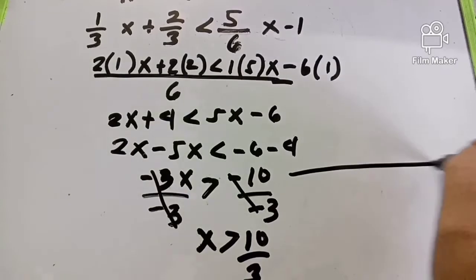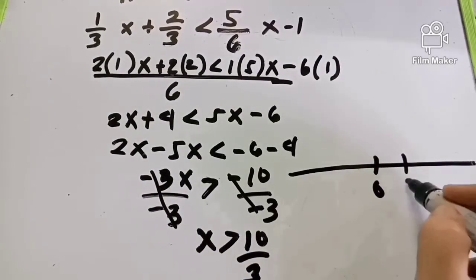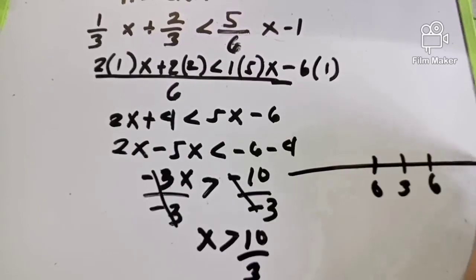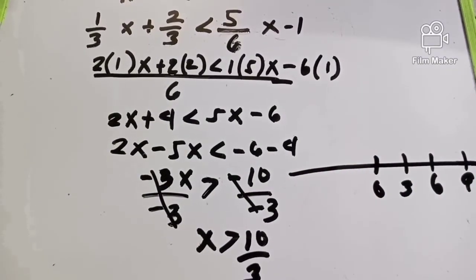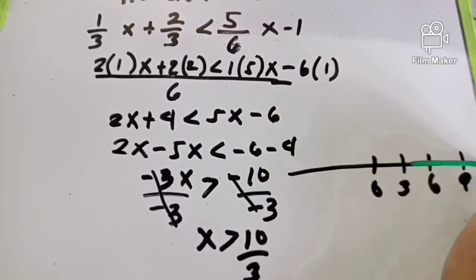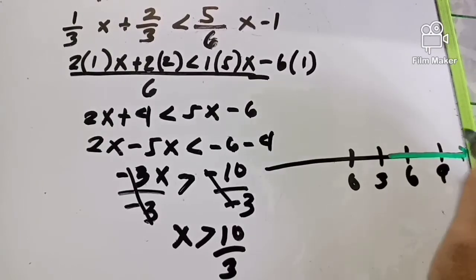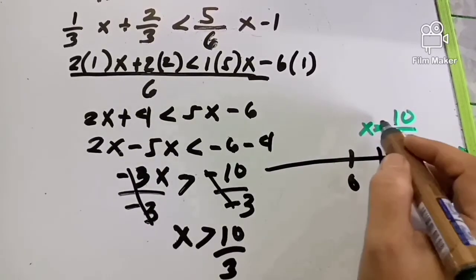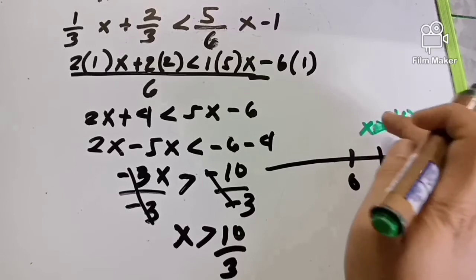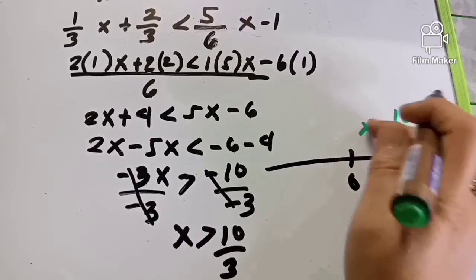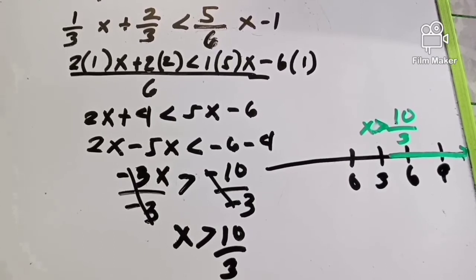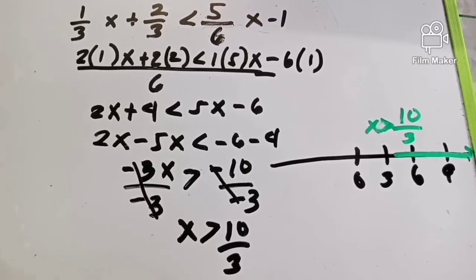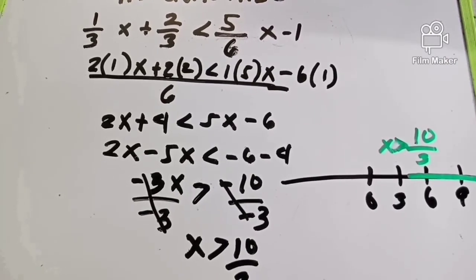How do we graph X greater than 10 over 3? On the number line: 0, 3, 6, 9. Note that 10 divided by 3 is approximately 3.33. We place an open circle at 10/3 and the line goes to the right. That's our answer: X greater than 10/3. I'll provide more different examples so you can learn how to solve inequalities.